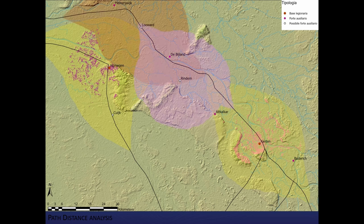In this image, for example, we see the area between Xanten and Nijmegen, where we see the area visible and reachable by both forces. Buderich is both visible and reachable from Xanten, while Alt-Kalkar is not visible. So, if there was a visual communication system between the different forts, it is possible to hypothesize an intermediate camp not yet known. In this case, the two hypothetical centers of Loward and Rindern would represent perfect points of conjunction in the network of Roman encampments.